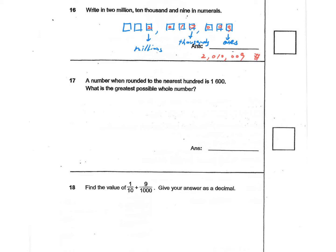In question 17, a number rounded to the nearest 100 is 1,600. What is the greatest possible whole number? The number we have is ranging between 1,550 all the way to 1,649.